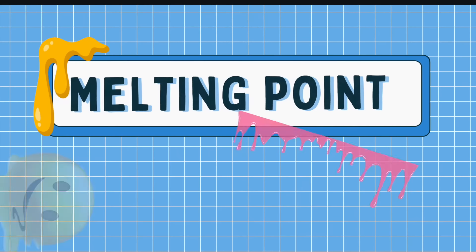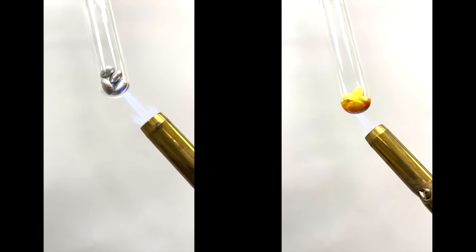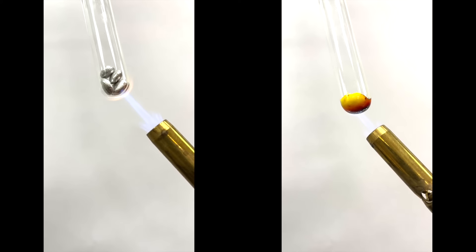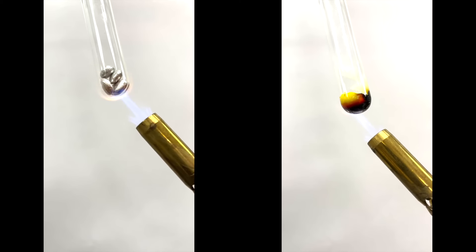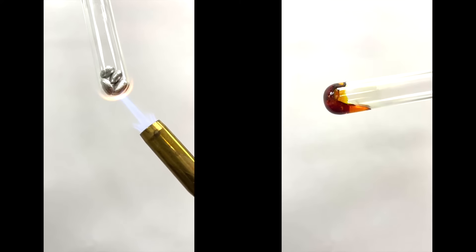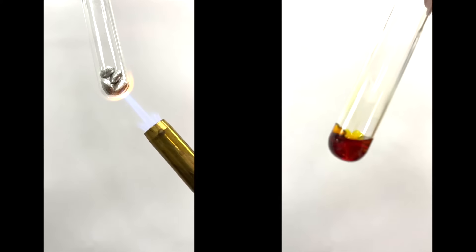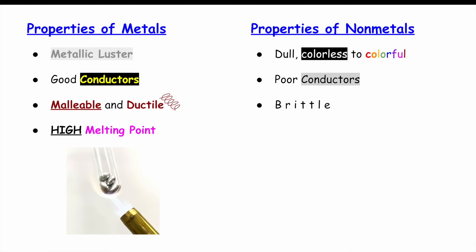Now let's take a look at their melting point. On the left we have a metal, aluminum, and on the right we have sulfur. We're going to heat them up with a blowtorch and see if they melt. As you can see already, the sulfur on the right is turning into a liquid, whereas the metal on the left has not even begun to melt. So metals have very high melting points, whereas non-metals have low melting points.